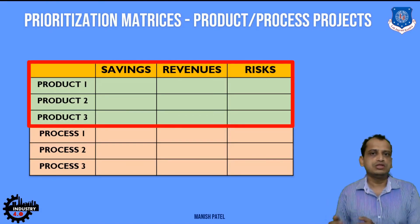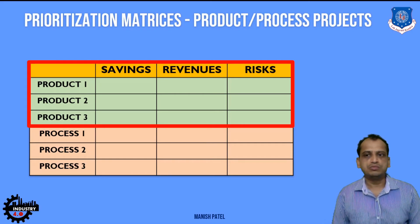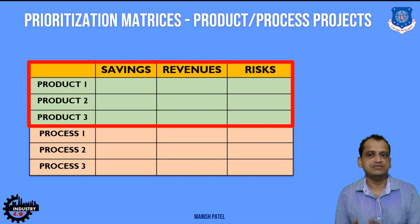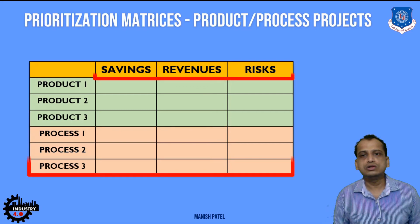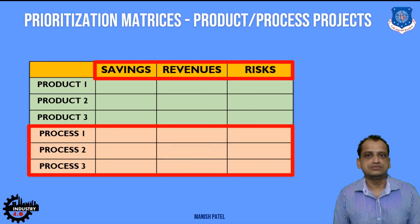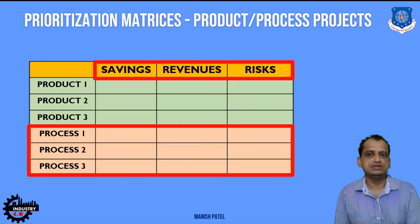Here we focus on savings, revenues, and risk when implementing Industry 4.0 technologies. Based on different products, you will incorporate these technologies and find out what the savings, revenues, and risk involved are in terms of numbers. You also look into different projects based on processes, classifying them based on products and processes, and incorporating this prioritization metric of savings, revenues, and risk.